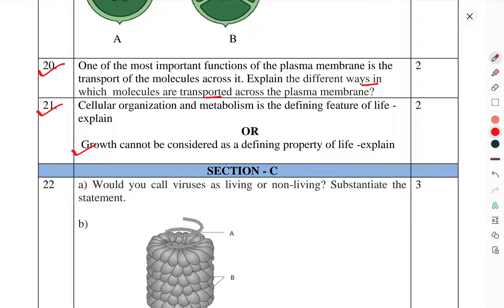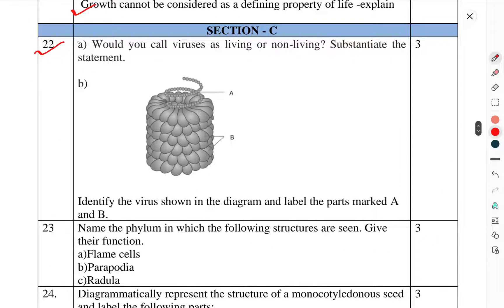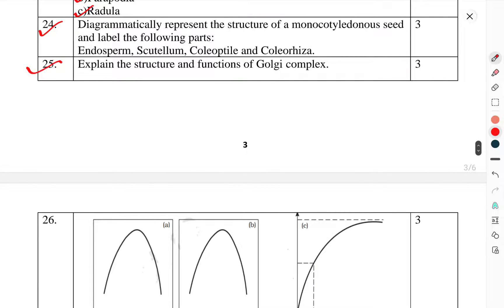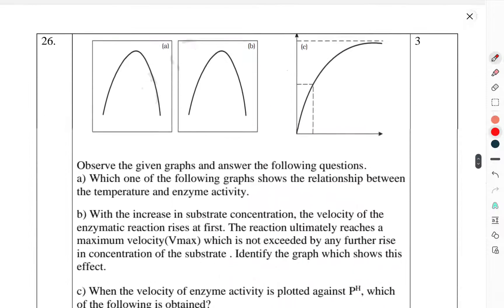Section C. Question 22: Would you call viruses living or non-living? Substantiate the statement. Identify the virus shown in the diagram and label the parts marked A and B. Question 23: Name the phylum in which the following structures are seen. Give their function: flame cell, parapodia, and radula. Question 24: Diagrammatically represent the structure of monocotyledonous seeds and label the following parts: endosperm, scutellum, coleoptile, and coleorhiza. Question 25: Explain the structure and function of Golgi complex.